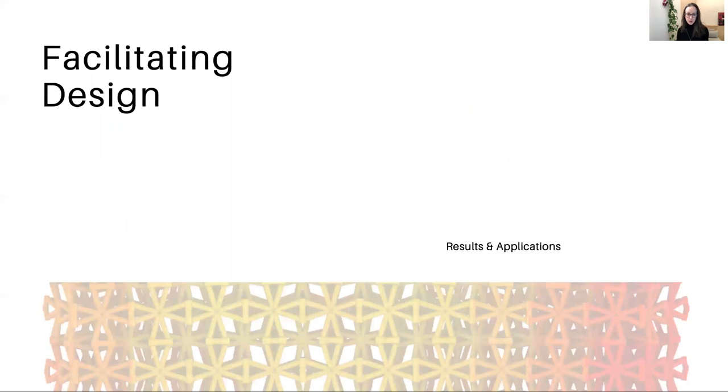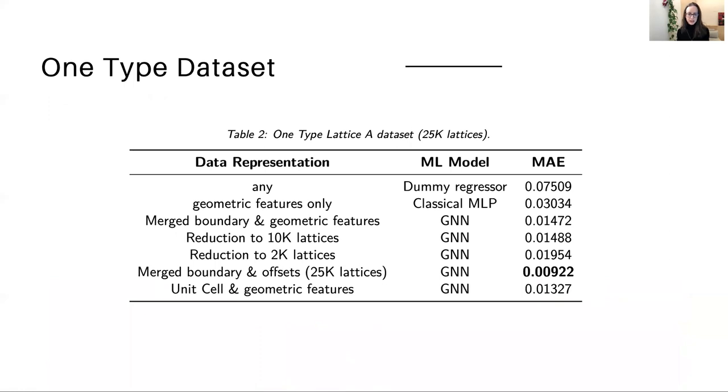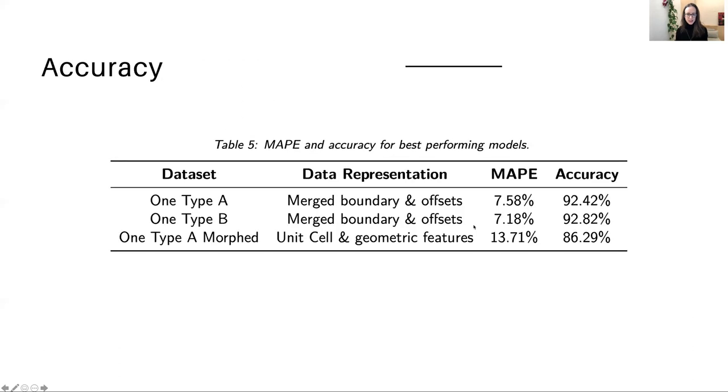Let's look at some of the results of the model. On the one-type data set, we did find that we obtained a significant reduction in the mean absolute error in our model. So the best performing model is here, and that was the data representation was that merged boundary representation together with the offset data that I mentioned. I just want to quickly highlight the fact that we also found that reducing the size of the data set to a far less dense sample, only 2,000 lattices, was almost as good. So this suggests some directions for future work, creating larger data sets that incorporate many different combinatorial types, but with fewer geometric offsets. In terms of the accuracy, you can see here that the one-type data set we had an accuracy of over 92 percent. The morph data set was slightly lower because we had to use a different representation, but it was still reasonable.